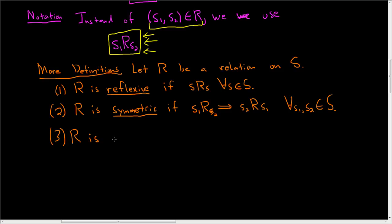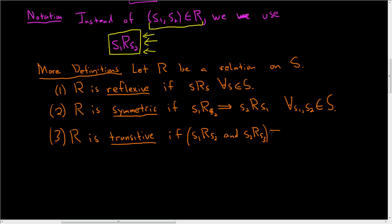R is transitive. We say a relation R is transitive if whenever s1 is related to s2 and s2 is related to s3, then it follows that s1 is related to s3, and this has to be true for all s1, s2, s3 in S.